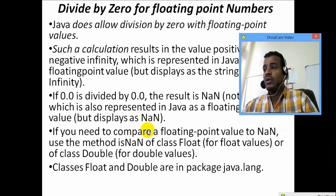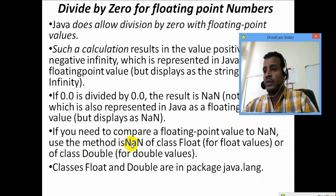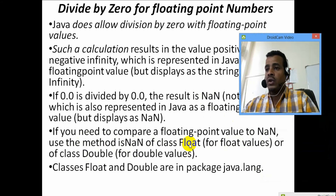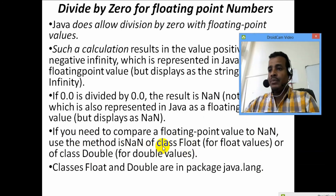If you compare floating point values, you can use the Float class and its isNaN method. Float is in the java.lang package. Float.isNaN() is the method. Float, Integer — these are wrapper classes. All use capital letters for the class names.